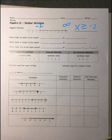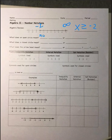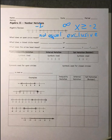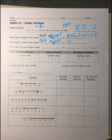When we're talking about some of our terminology: an open circle means not equal. Forgive my writing, it's not very good but we'll work on it. An open circle means not equal, which is exclusive.